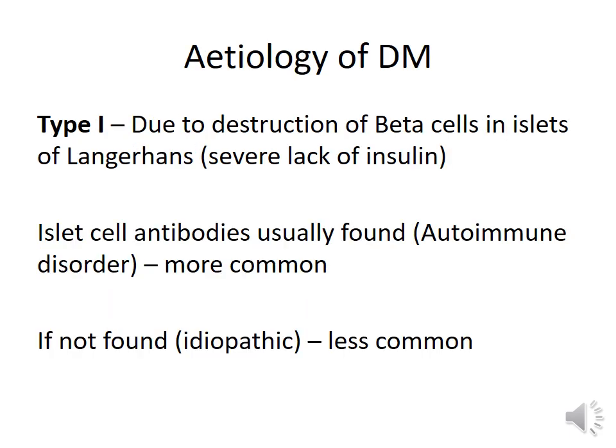The etiology of type 1 diabetes is due to destruction of beta cells in the islets of Langerhans. Usually it is autoimmune in nature, and it can be diagnosed by the formation of islet cell antibodies in the blood sample. In a few cases where islet cell antibodies are not found, it can be called idiopathic type 1 diabetes mellitus.